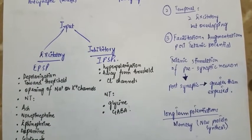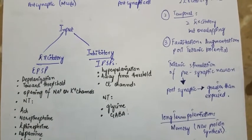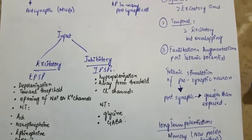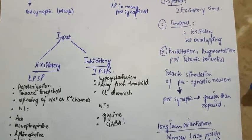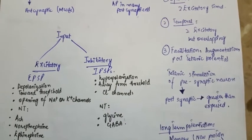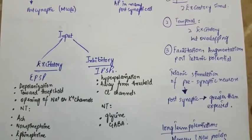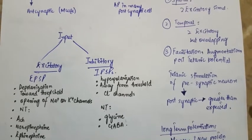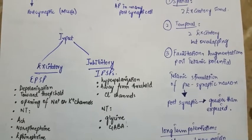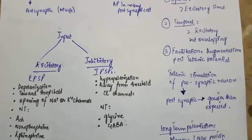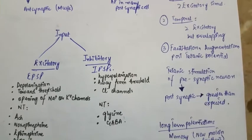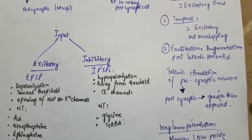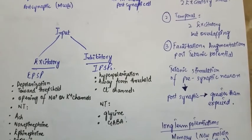Inhibitory post-synaptic potentials lead to hyperpolarization of the membrane away from threshold. This is due to the opening of chloride channels. The inhibitory neurotransmitters are glycine and GABA.